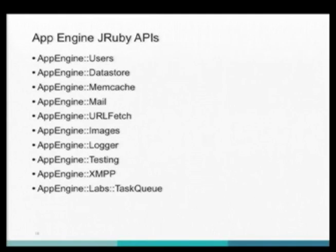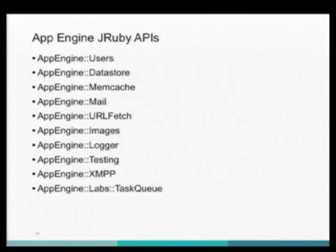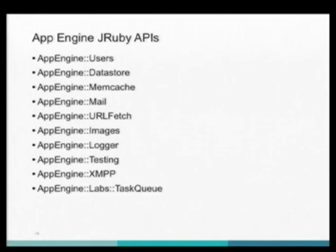You have a Memcache API very much like Memcache on any other service, modified slightly to work with App Engine. There's a Mail API for sending and receiving mail, and a URL Fetch API — that's critical because you can't open sockets or create threads. We have a URL Fetch API compatible with Net::HTTP, so your existing gems should function even if they're not explicitly using URL Fetch. There's also an Images API with a community-contributed wrapper around the Java low-level API.